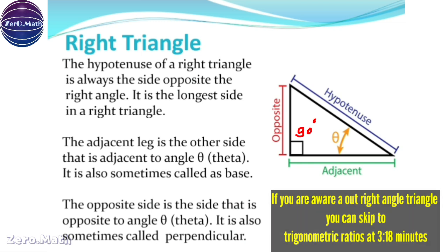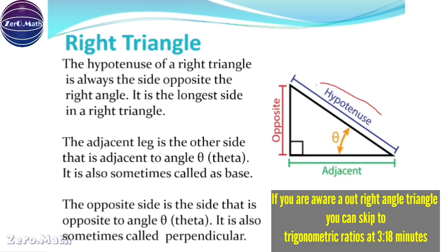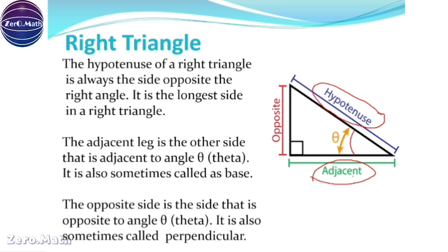Now we have to deal with certain sides. Number one, we'll talk about the hypotenuse — the longest side of a triangle. The adjacent side is the side which is adjacent to angle theta. And the opposite side is the side which is opposite to the angle theta — that's called the opposite side of a right-angle triangle.